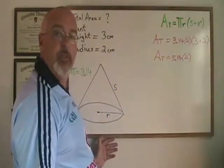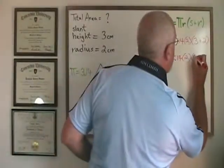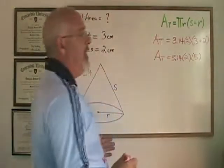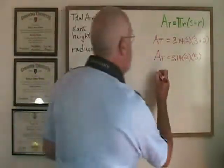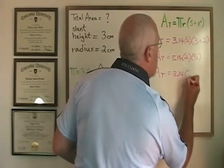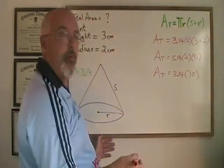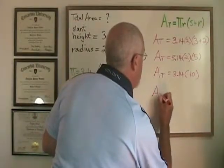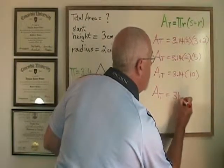The first thing I will do is simplify my bracket. 3 plus 2 is 5. Then I will multiply the 2 by the 5, which gives us 10, and then 10 times 3.14 will be 31.4.